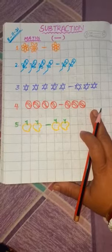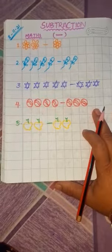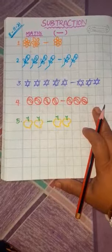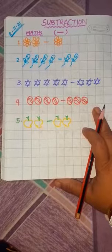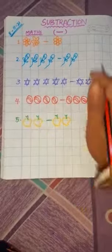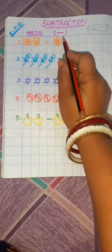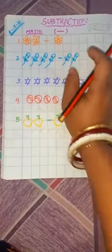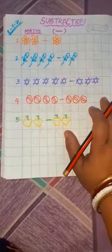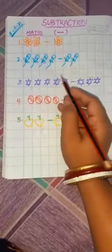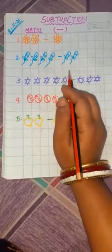Children, jin chijou ko minus karne ke baad, how many remaining or how many left? Yeh janna subtraction hota hai. Now children, look at here. This is the symbol of subtraction or minus sign. Now, we will do subtraction with the help of these pictures. So let us start.